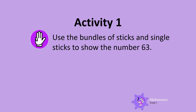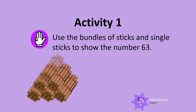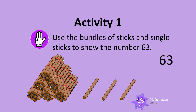Now use the bundles of sticks and single sticks to show the number 63. Let's do this one together. Each bundle has 10 sticks. We can first add bundles of 10 to get to 60, so let's count: 10, 20, 30, 40, 50, 60. Now we use the single sticks: 1, 2, 3. We now have 63 sticks. Well done!